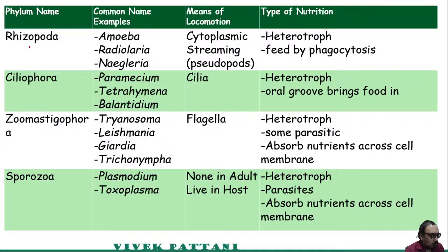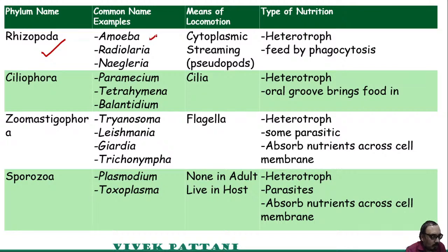Starting with the first phylum Rhizopoda, some examples are Amoeba, Radiolaria, and Negleria. Their means of locomotion is basically cytoplasmic streaming.